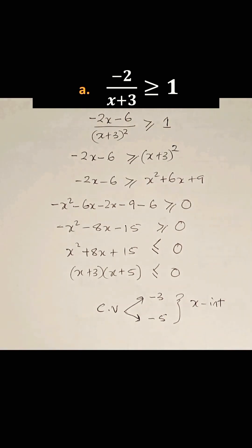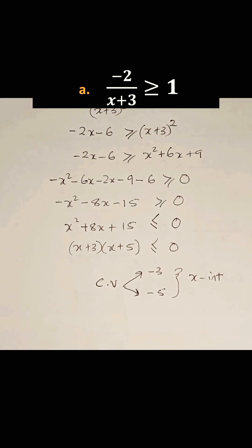Now we need to use the graphical method of solving inequalities. We just draw a number line. Then we write down the critical values. We have -5 and we have -3.